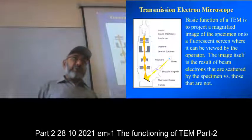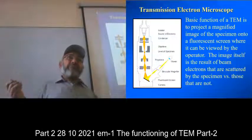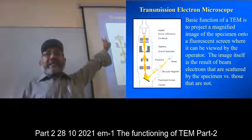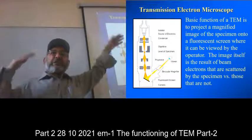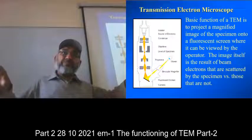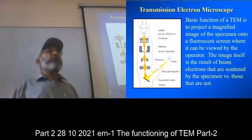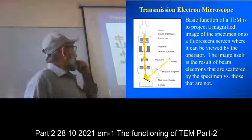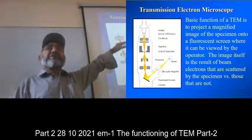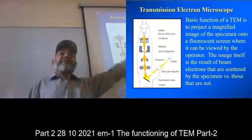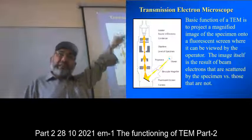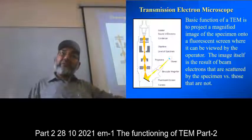The condenser aperture excludes the high angle scattered beam because we are interested only in the very low angle beams. Then the beam hits the sample, and as I told you, many events occur - photoelectric effect occurs, Compton scattering occurs, deflection occurs, backscattering occurs, transmission occurs - all sorts of events occur.